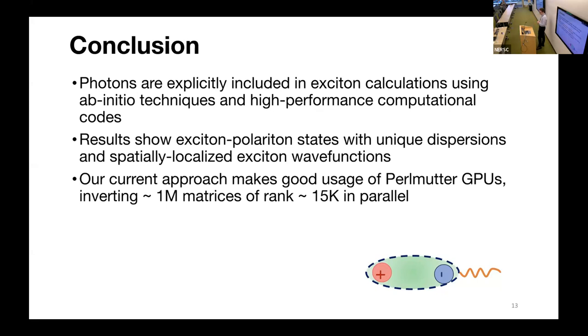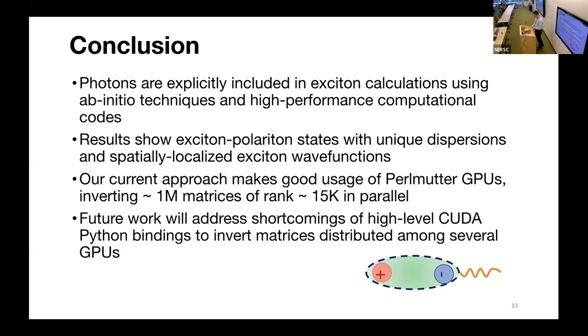Results show that exciton-polariton states have unique dispersion properties and spatial localization of their wave functions. All of this work is afforded by GPU scalability and inverting these 1 million matrices. So far, we've been able to invert them up to size maybe 15,000 or 20,000. But we'd really like to push the boundaries and use many GPUs to invert larger matrices.